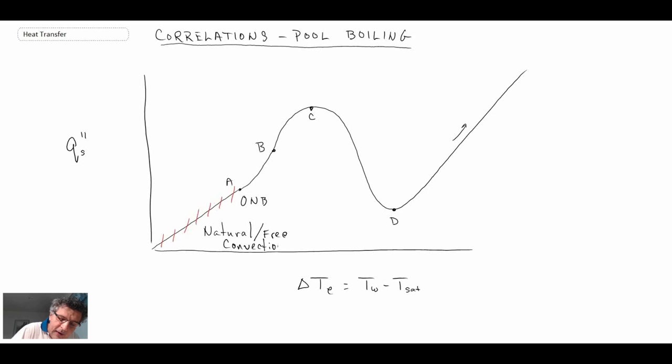What we will do, however, is we're going to look at relationships that enable us to determine what is going on in this region here. We'll also come up with a relationship that enables us to determine the critical heat flux there. We will have another relationship that enables us to get the minimum, so that is Q min, that's the Leidenfrost condition, and then up here we had Q max. And then finally, we will have relations that enable us to determine what is happening when we have film boiling occurring, which would be up here. So we're going to look at correlations for those different regions, and we will begin with nucleate pool boiling.